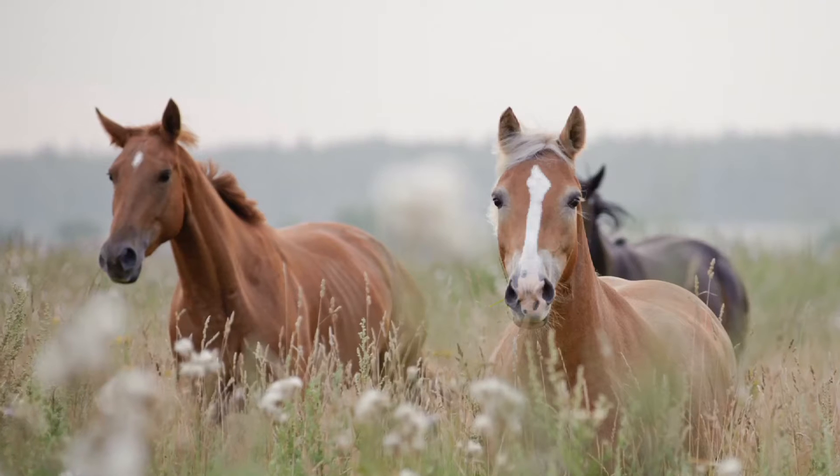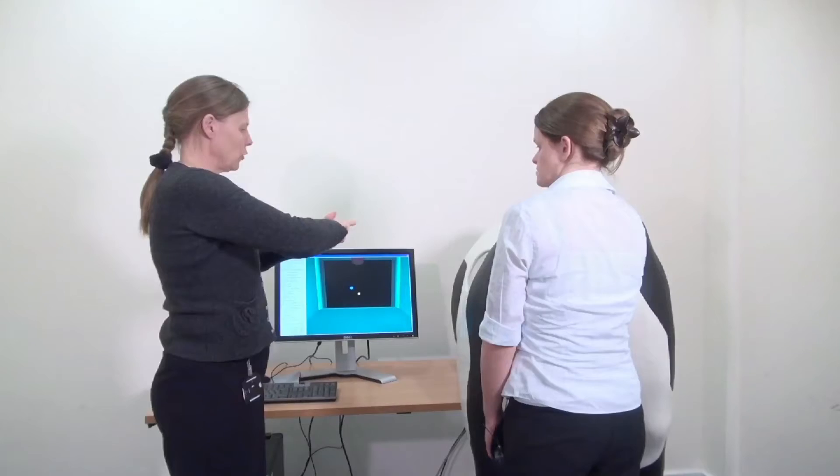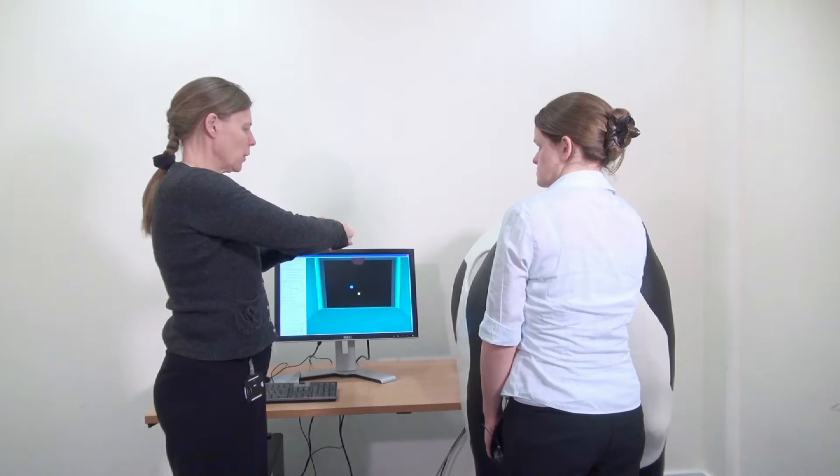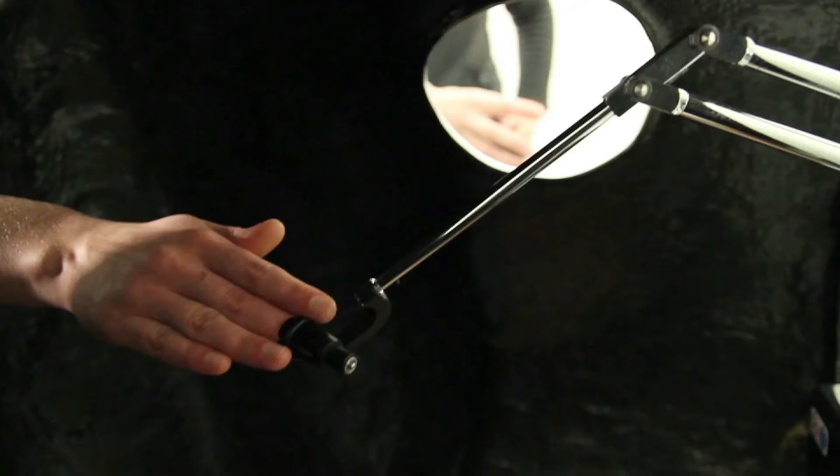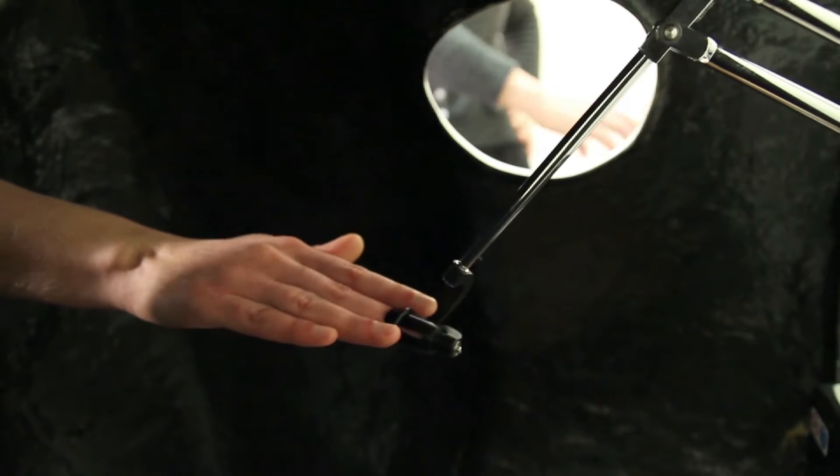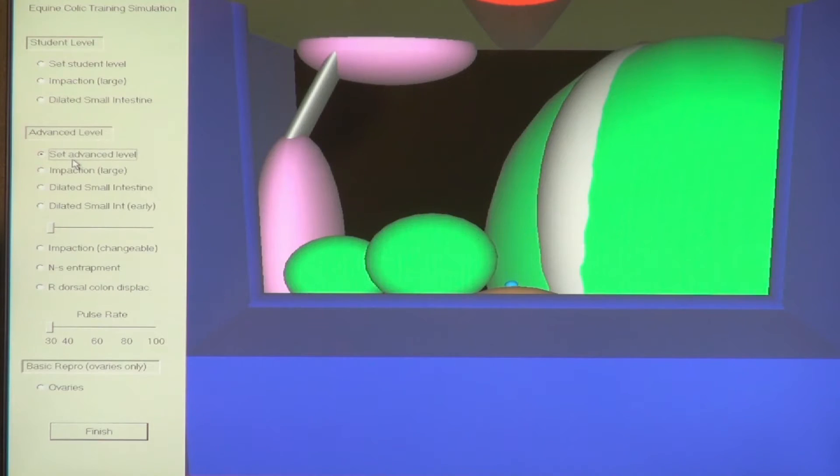The haptic cow and the haptic horse systems draw on virtual touch, or haptics, and enable students to carry out virtual rectal examinations on cows and horses, with their movements being monitored by their instructor.